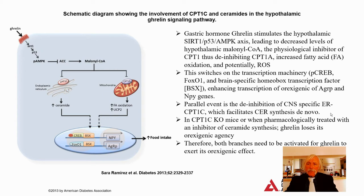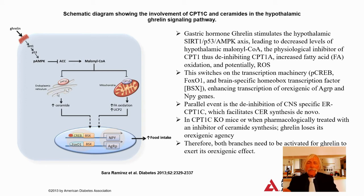The parallel event is the de-inhibition of the CNS-specific ER carnitine palmitoyl transferase 1C. That also allows fatty acids to enter into the lumen of the ER — not the mitosol of the mitochondria, but the lumen of the ER. That facilitates, in the ER, ceramide synthesis. I showed you last time that de novo ceramide synthesis — de novo sphingolipogenesis — occurs particularly in the endoplasmic reticulum. So CPT1C once knocked out in mice, or when you pharmacologically inhibit ceramide de novo biosynthesis, ghrelin no longer works.